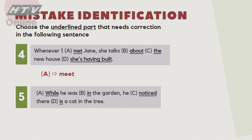Câu số 5: 'While he was in the garden, he noticed there is a cat in the tree.' Với 4 từ gạch dưới: 'While', 'he', 'noticed', và 'is'. Chúng ta dễ dàng nhận thấy đáp án D là không chính xác - phải là 'He noticed there was a cat in the tree.' It's very obvious.